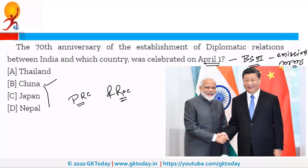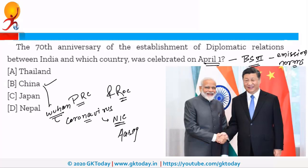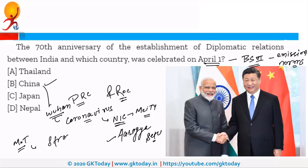China was also in news because of Wuhan. Wuhan is in China and the outbreak of coronavirus started from there. Recently, NIC — that is National Informatics Center — in India launched an app called Aarogya Setu for preventing the transmission of coronavirus. This NIC is under the Ministry of Electronics and Information Technology. Aarogya Setu will warn you if you are near a person showing symptoms of coronavirus. Apart from that, the Ministry of Tourism also launched a portal called Stranded in India to assist foreign tourists stranded in the country due to lockdown, providing information about available services.